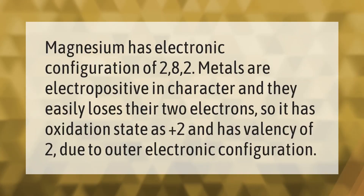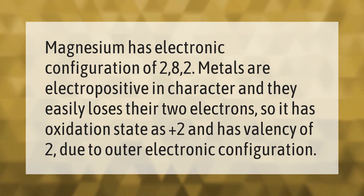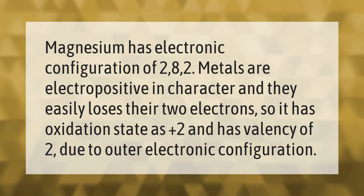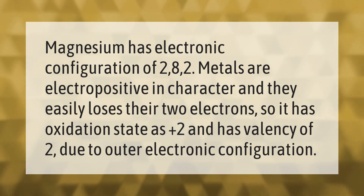Magnesium has electronic configuration of 2,8,2. Metals are electropositive in character and they easily lose their two electrons, so magnesium has oxidation state of plus 2 and has a valency of 2 due to its outer electronic configuration.